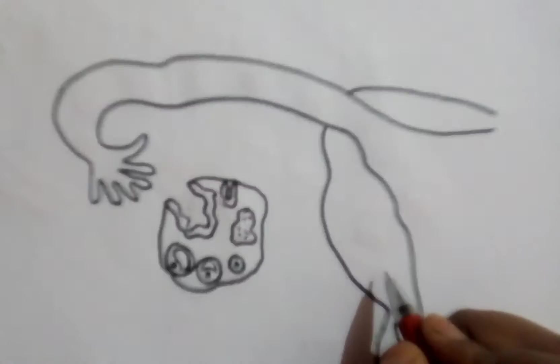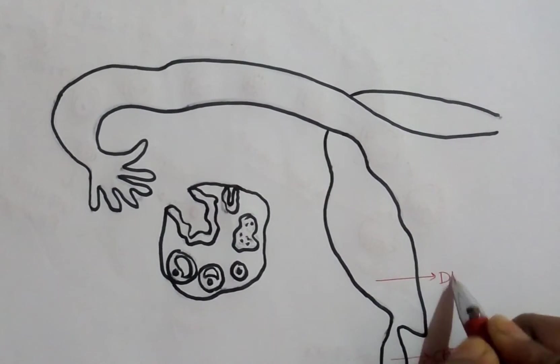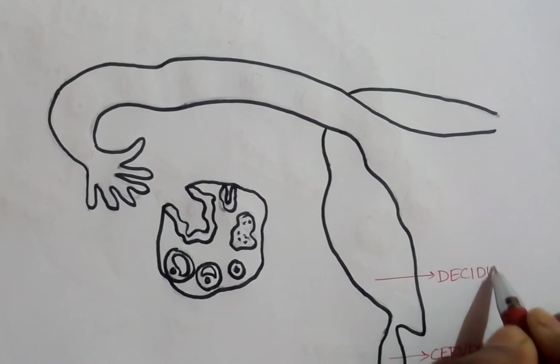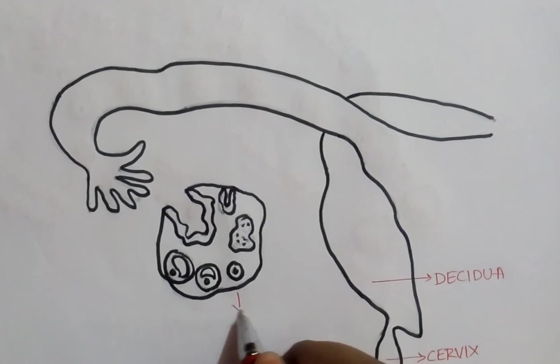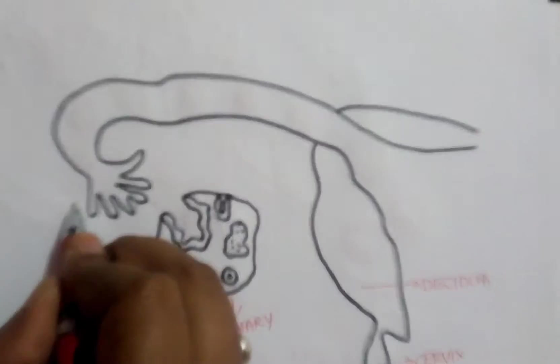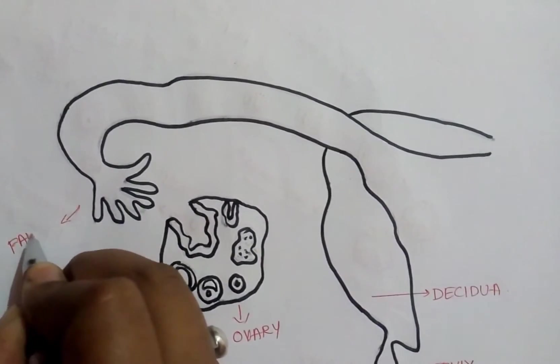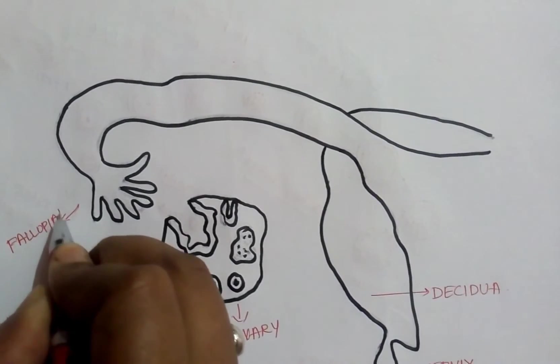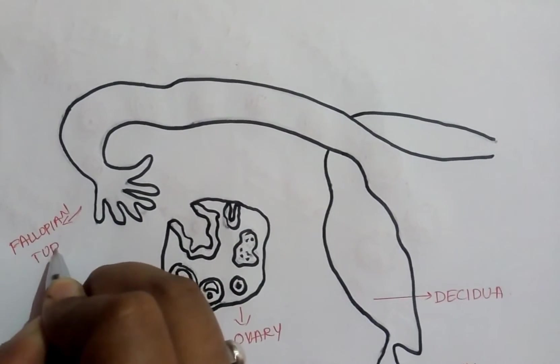This is the part of uterus that is cervix. This is decidua and this is the ovary and this part of uterus is called fallopian tube, which is also called as uterine tube.